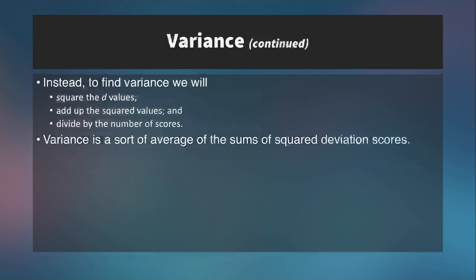So to find variance, we will first square the deviation values. We'll add up the squared values and then divide that by the number of scores. Variance is kind of like the average of the sums of squared deviation scores. Now, if we're calculating the variance of an entire population, we've measured every score in a population, there's nobody else we could measure in that population, then we would divide it by the total number of scores or by N.